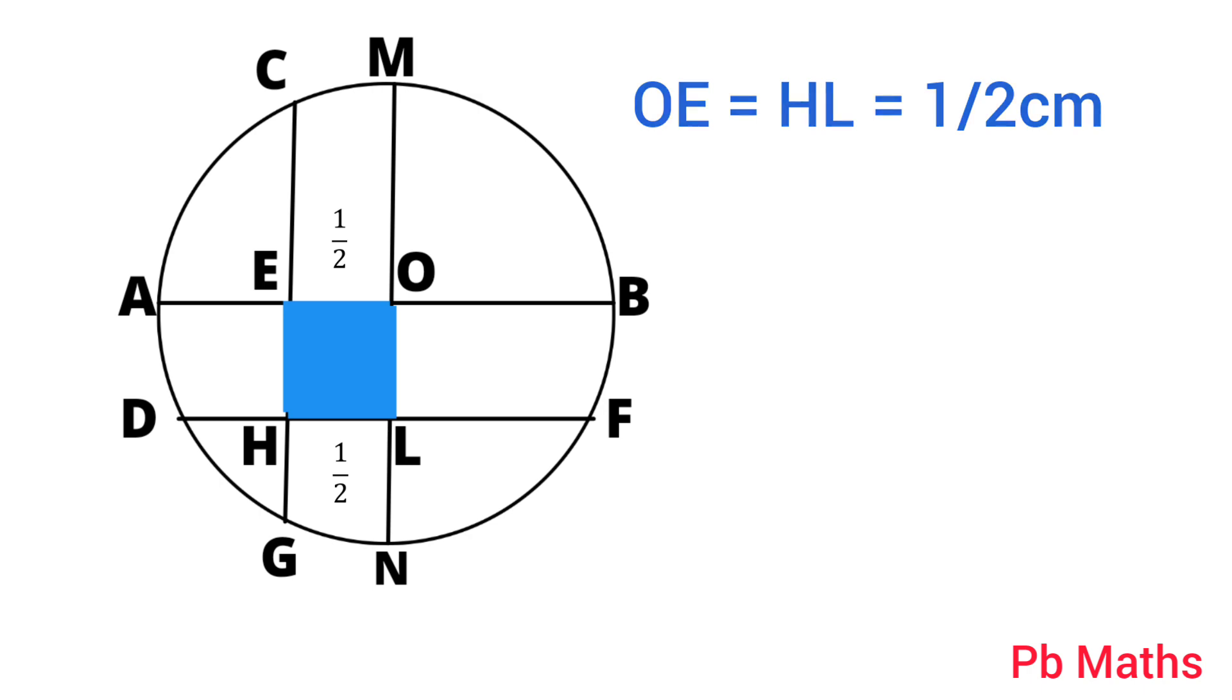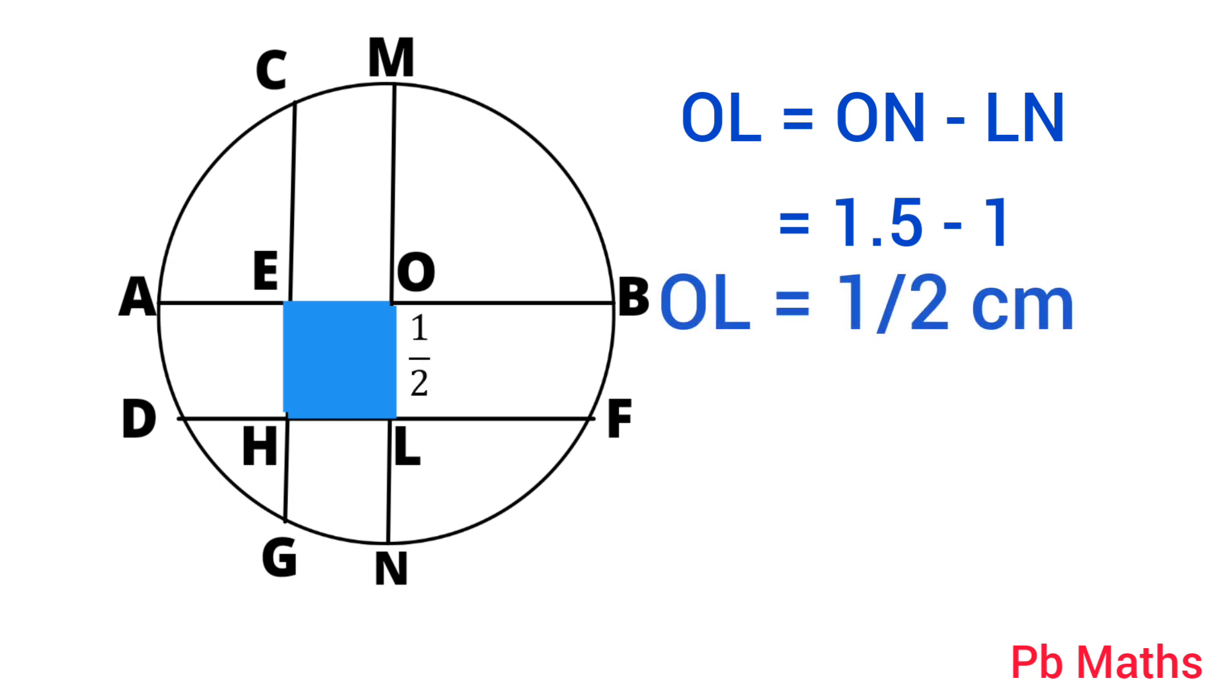On the other hand, let's calculate OL. OL equals ON minus LN. Length of ON is 1.5 cm or 3/2 cm minus the length of LN is 1 cm. So, the length of OL is 1/2 cm.